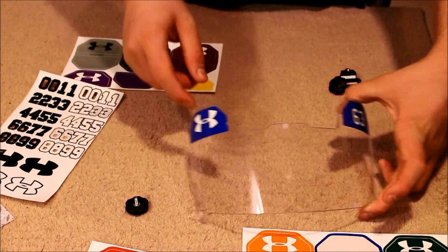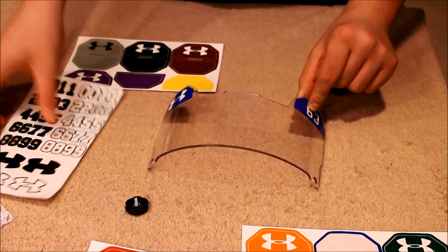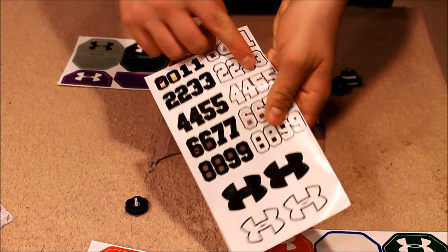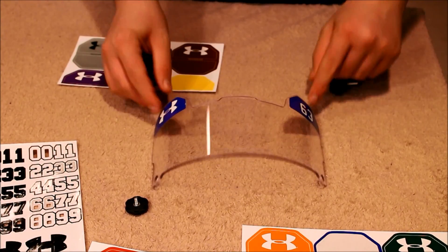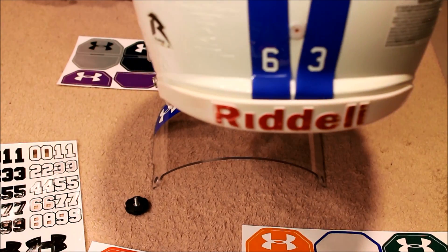So on mine I took the blue one for the Under Armour. And then I took the other one and put it on here. And then I took off the 6 and the 3 to put my number on it. And also because I have extra decals I put a 63 on the back of my helmet as well.